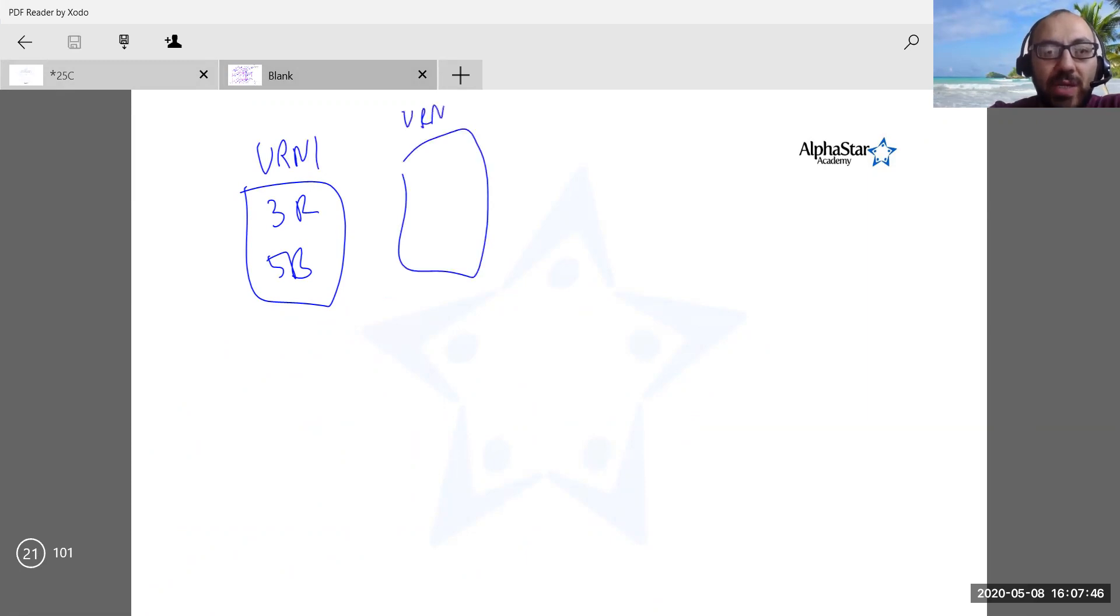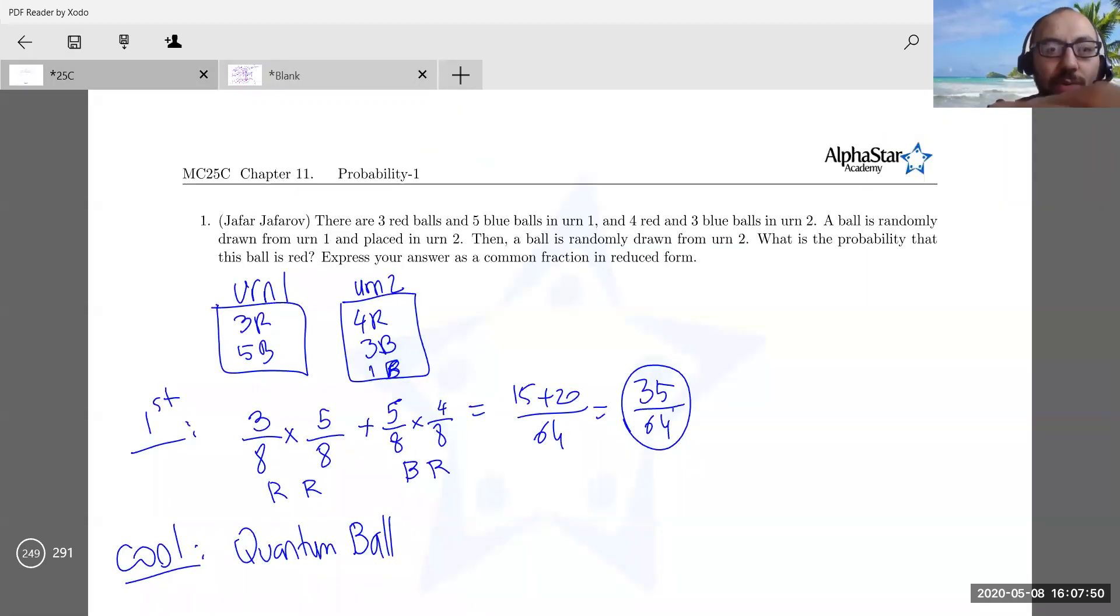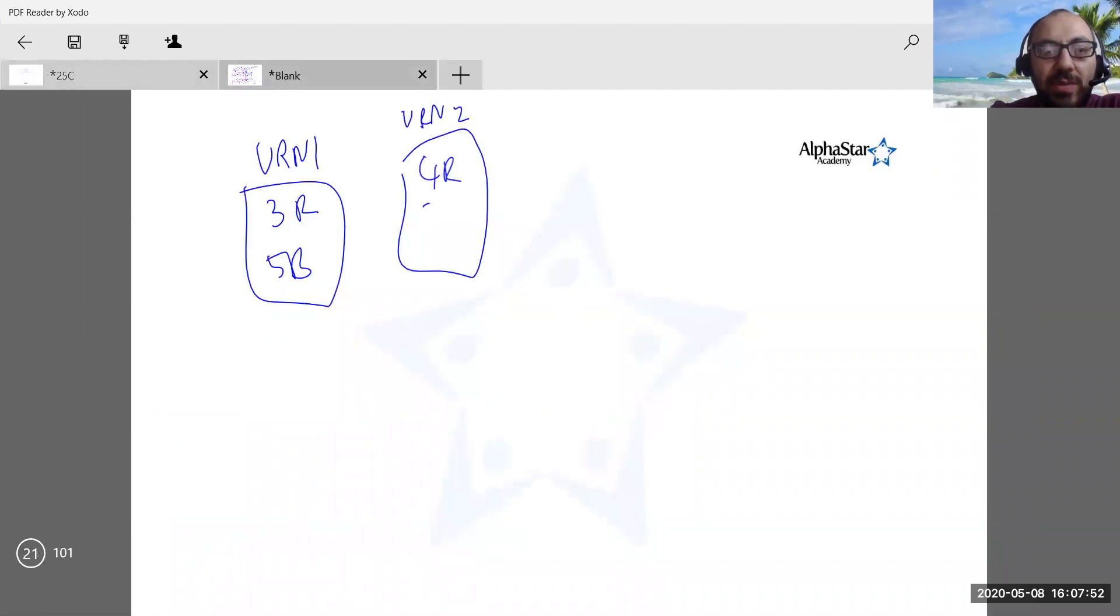This is so cool. So three, five on one, and then urn two has four red, three blue. I'm gonna add a quantum ball to the second urn. One quantum ball, the color of it I don't know, it changes. Sometimes it's red, sometimes blue. What is the color? 3/8 of the time it's red, 5/8 of the time it's blue. Mysterious ball.